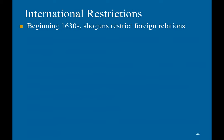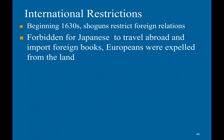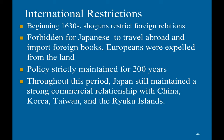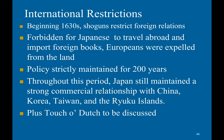Beginning in the 1630s, the Shoguns enacted strict foreign relations. They forbade Japanese to travel, banned the import of foreign books, and expelled Europeans from the land. This policy was strictly maintained for 200 years. However, throughout this period, Japan still maintained a strong commercial relationship with China, Korea, Taiwan, and the Ryukyu Islands. There was also a small amount of Dutch influence in Japan.